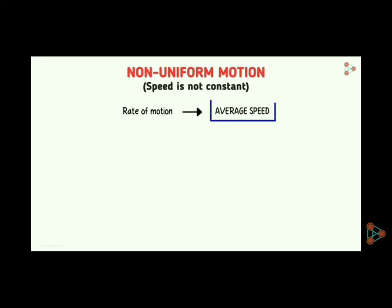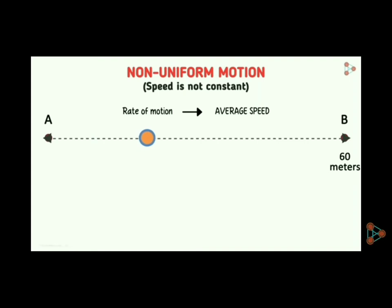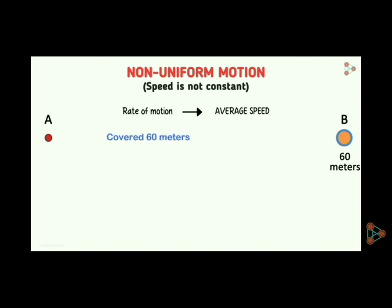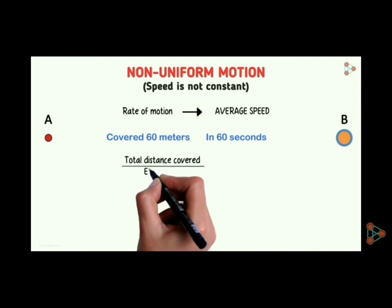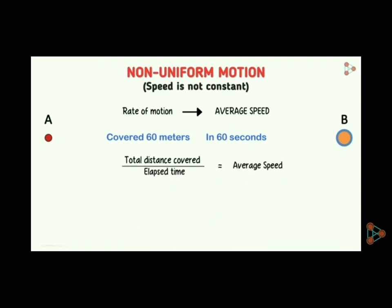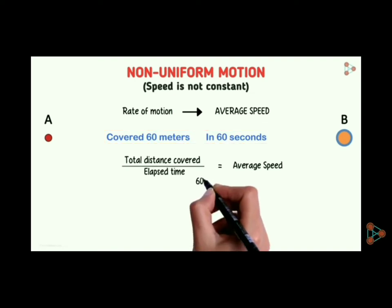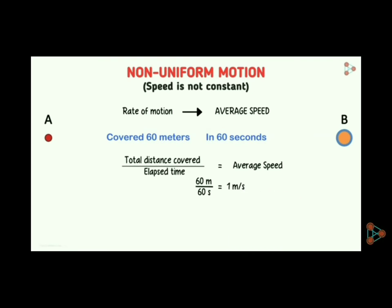Now, how can you find average speed? Suppose a person is moving with a non-constant speed and covering a distance of 60 meters, exhibiting non-uniform motion. He has covered 60 meters in 60 seconds — what will be the average speed? Try to find out. Total distance covered divided by elapsed time is the average speed. Total distance is 60 meters and the time elapsed is 60 seconds, so 60 divided by 60 is 1 meter per second. This is your average speed. The unit you can verify from the left-hand side.